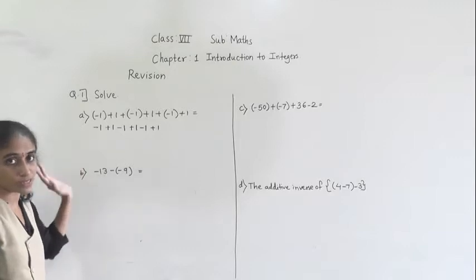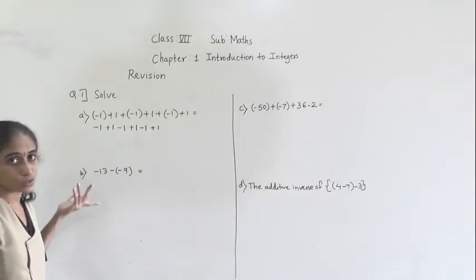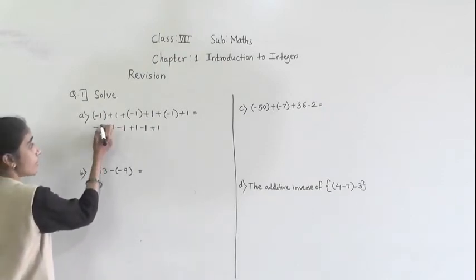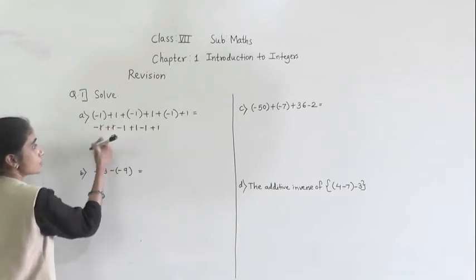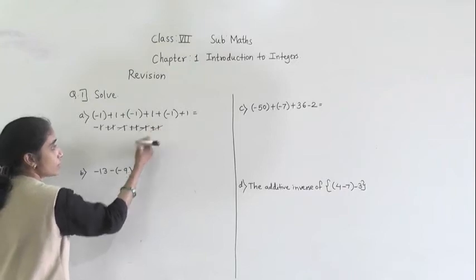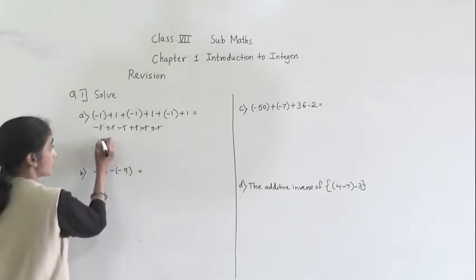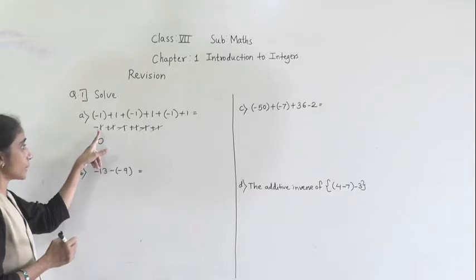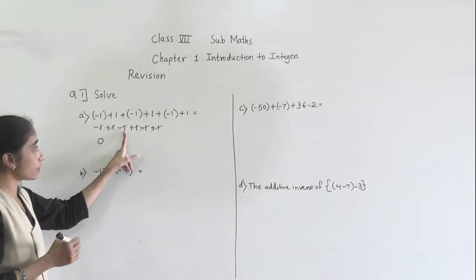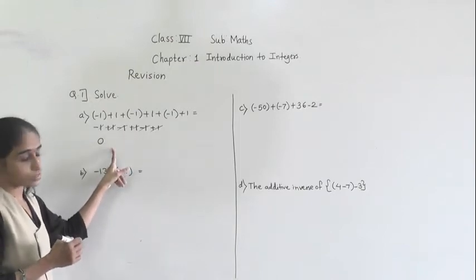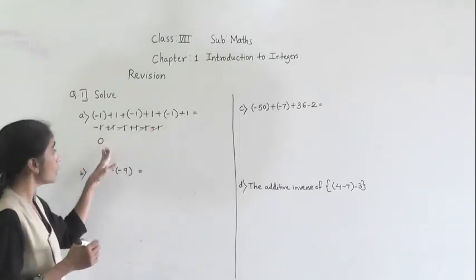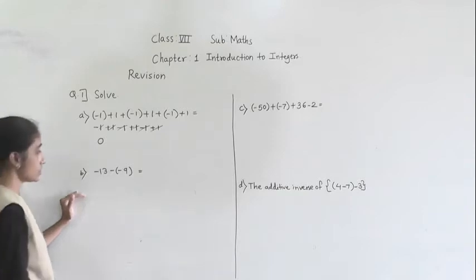So you are going to subtract 1 from this 1. So 1 minus 1: you are going to get 0. Or you can do it this way also: minus 1 plus 1 get cancelled, minus 1 plus 1 get cancelled, this minus 1 plus 1 get cancelled, minus 1 plus 1 get cancelled. So what answer are you going to get? 0. If you subtract this one from this one, you get 0. Again subtract this one from this one - 0 again. Subtract this minus 1 from this plus 1 - you get 0. So at the end you are going to get the answer 0.